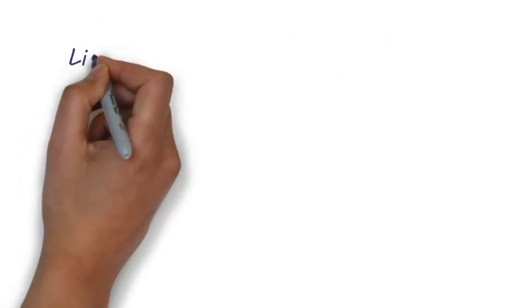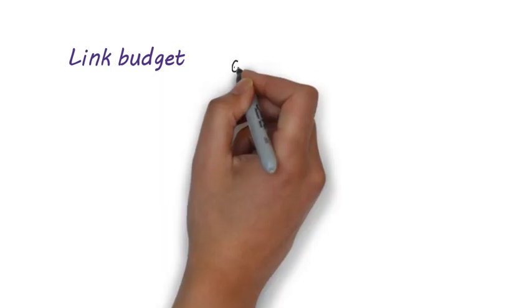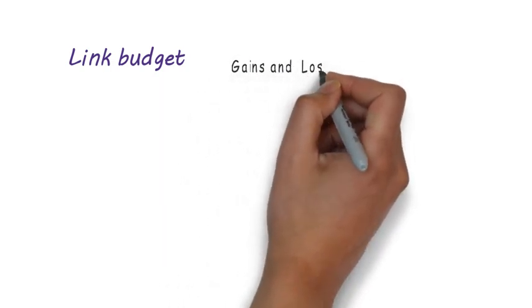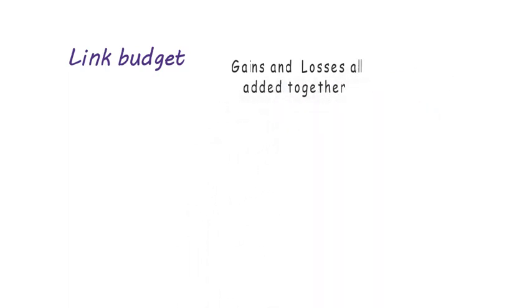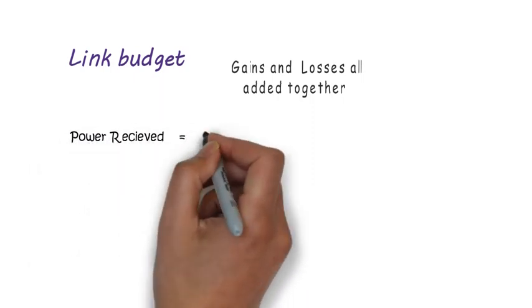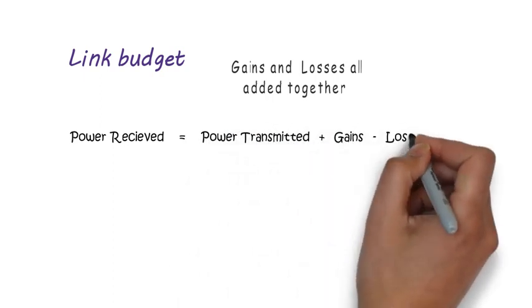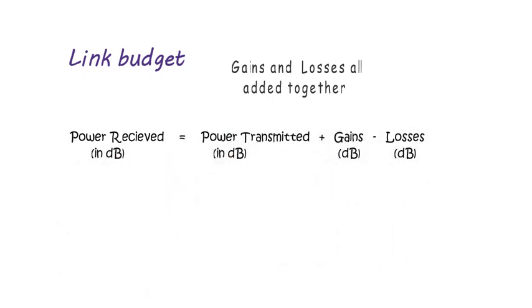Now let's see what is link budget and what are the parameters that affect the budget. The various gains and losses of a system are calculated and added together. This result is commonly known as link budget. A general form of link equation is power received equal to power transmitted plus gains minus losses. All the terms here must be taken in decibel unit.